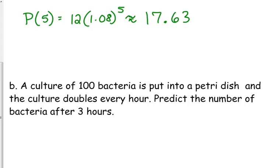Okay, let's talk about a culture of bacteria, actually. A culture of 100 bacteria is put into a petri dish, and it doubles every hour. Predict the number of bacteria after three hours. So, let's begin by writing this equation. P of t is equal to the initial amount, 100, times 1 plus the rate. Well, they didn't give us a percentage for the rate. They tell us that it doubles every hour.